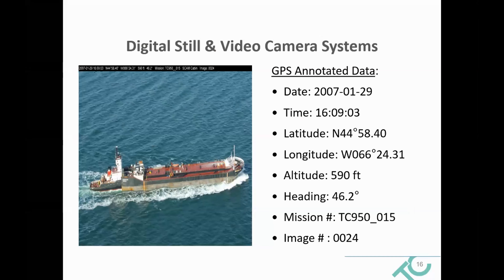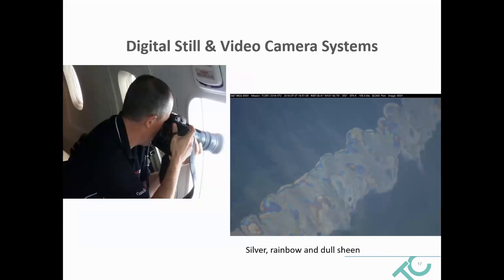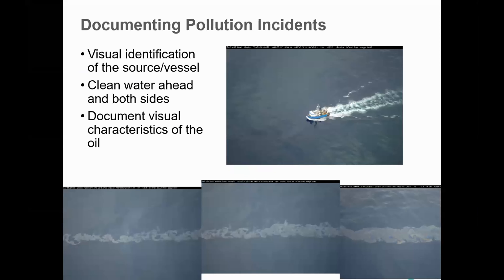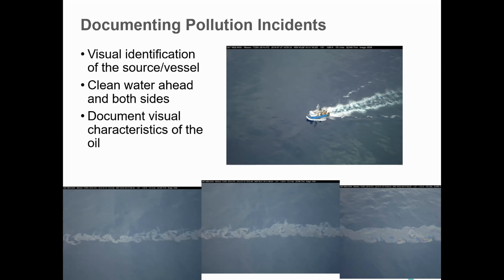Digital still cameras: we have one on board, and for every single image taken, it's automatically annotated with GPS information about the aircraft. This provides documentation and allows us to identify targets. Our surveillance officers are trained to capture images — capturing an image of oil on water is not easy, especially from a moving aircraft. It's primarily used for documenting pollution incidents: visual identification of the source vessel, clean water ahead and behind it, and documenting visual characteristics of the oil itself. In this case, it's an incident of a vessel underway with an oil slick stretching 22 nautical miles.